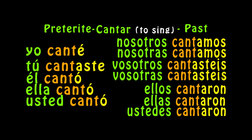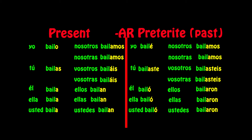Remember, the vosotros form is the informal form used in Spain, and ustedes is the formal form. Here I leave you with a chart with the present tense on one side of an AR verb like bailar, and the preterite or past on the other side. Present tense: yo bailo, tú bailas, él baila, ella baila, usted baila, nosotros bailamos, nosotras bailamos, vosotros bailáis, vosotras bailáis, ellos bailan, ellas bailan, ustedes bailan.